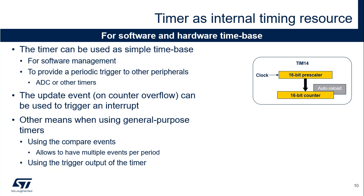The simplest use case for a timer is to provide an internal time base. This is commonly used by software routines to provide periodic interrupts or single-shot timeout protection. The timer can also provide periodic triggers to other on-chip peripherals, such as the ADC and other timers, through the interconnect matrix. The update event from the timer, typically on counter overflow, is the usual means to have a software time base interrupt or to trigger a periodic event. Multiple timing events can be generated with a single timer using multiple compare channels.